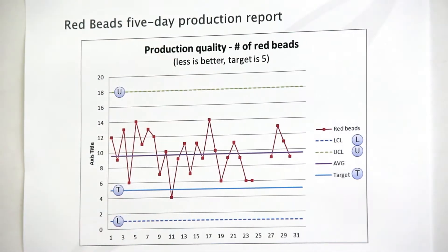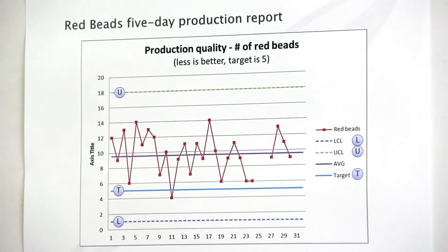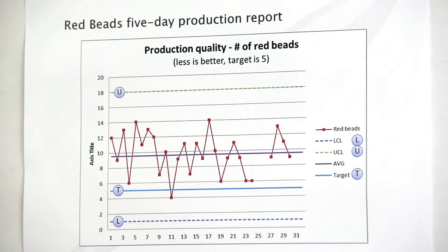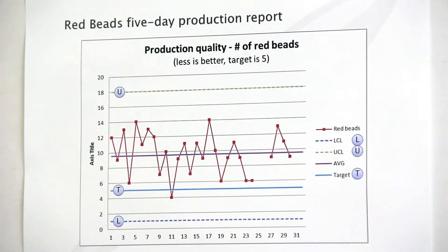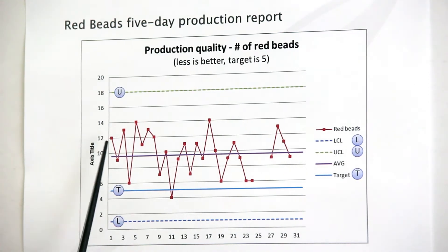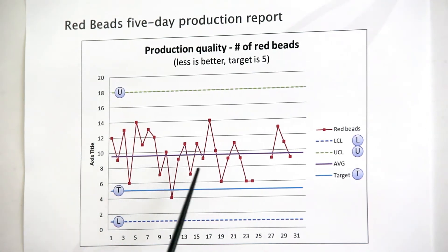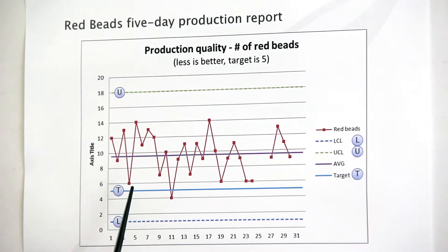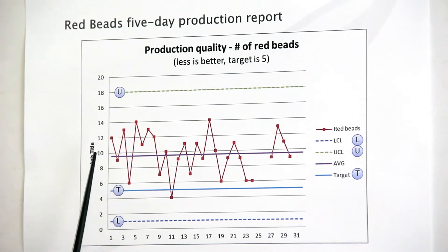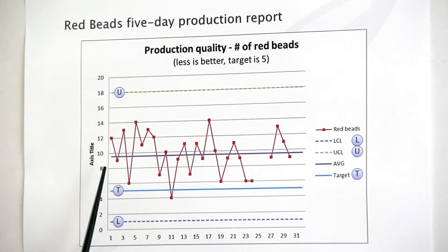Now, we can see here a control chart for one of the experiments run some time ago with a class of students, where we ran the experiment for five days. What you can see here is all the red points. They represent the number of Red Beats obtained by each one of the participants in turn. This is a chronological series, also known as a time series.